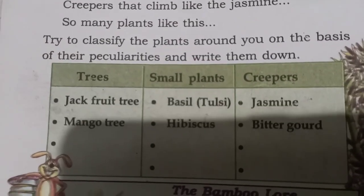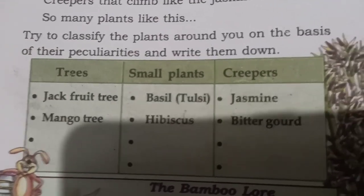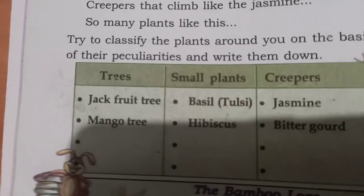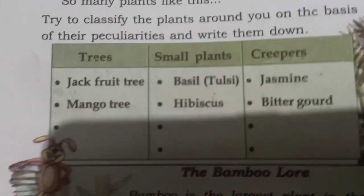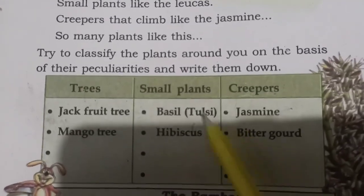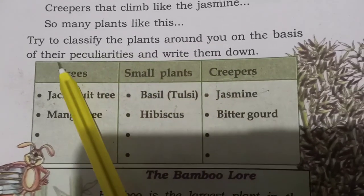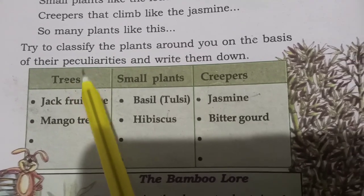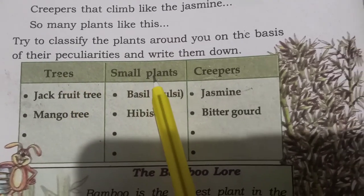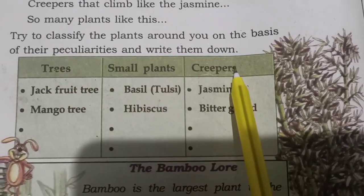We discussed about the plants around us. And we classify the plants into three groups, which are the trees, small plants, and creepers.